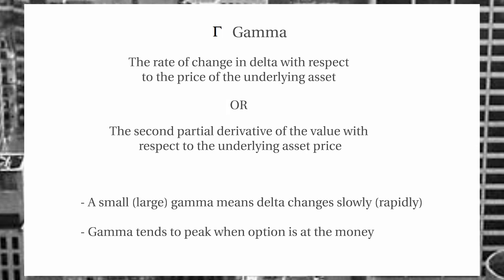Next we have gamma, which is how much delta will move with respect to the underlying asset or stock price. Mathematically, delta is the partial derivative, and gamma is the second partial derivative — the rate of change of the rate of change of the option value with respect to the underlying asset. A small gamma means that delta is changing slowly, and a large gamma means that delta is moving very quickly. An important point to remember is that gamma tends to peak when the option is at the money, so it can slide in value up and down as we go into and out of the money.